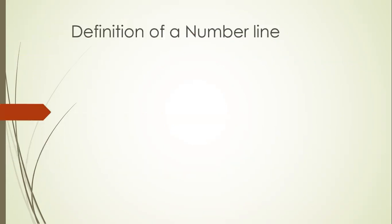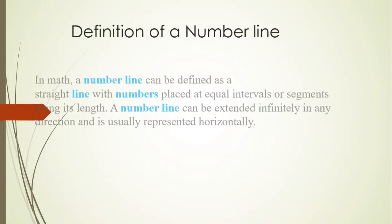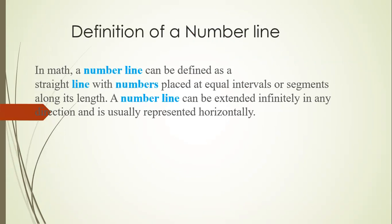In maths, a number line can be defined as a straight line with numbers placed at equal intervals or segments along its length. A number line can be extended infinitely in any direction and is usually represented horizontally. Let's understand it step by step.